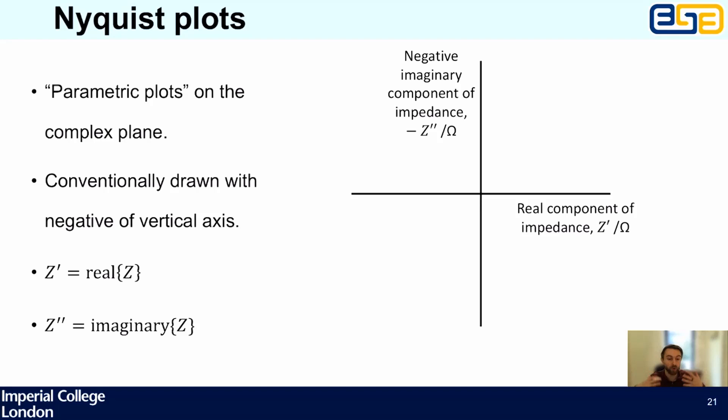The graph has axes −Z″ versus Z′. This is almost all impedance plots you'll ever see. The vertical axis is negative because most things of interest are capacitances with negative imaginary components — it saves from drawing the axis at the top and going down. It's just a useful convention.